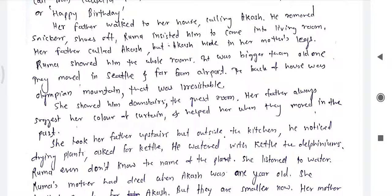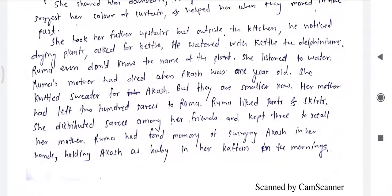Her father had always helped with garden suggestions when they moved in the past. Outside the kitchen he noticed the dying plants — he watered the keto and the delphiniums. Ruma didn't even know the name of the plant. Ruma's mother had died when Akash was just one year old. Her mother had left 200 saris to Ruma, but Ruma preferred pants and skirts. She distributed the saris among her friends and kept three to recall her mother's memories.